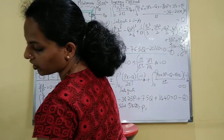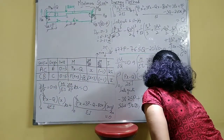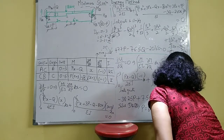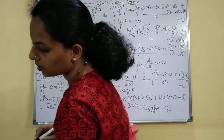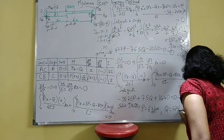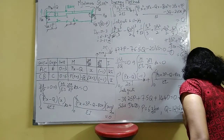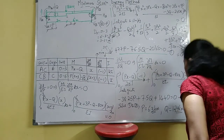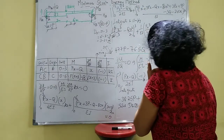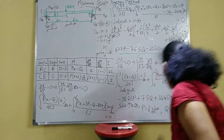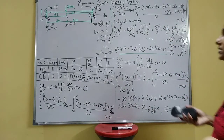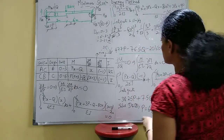After solving, you will have P = 63 kilonewton and Q = 129 kilonewton meter. Since we got positive values, the assumed directions are correct — M_A is anticlockwise.